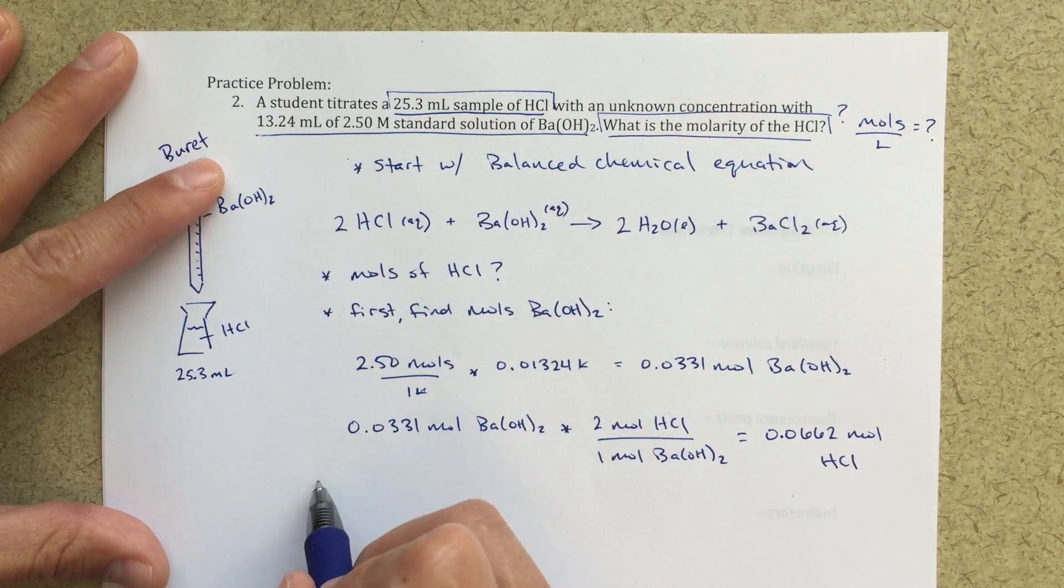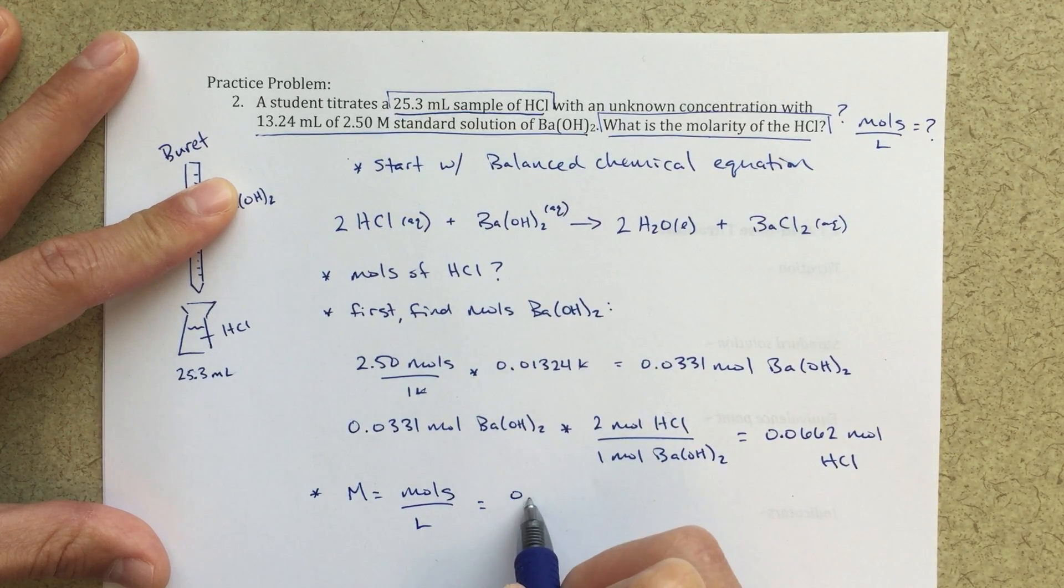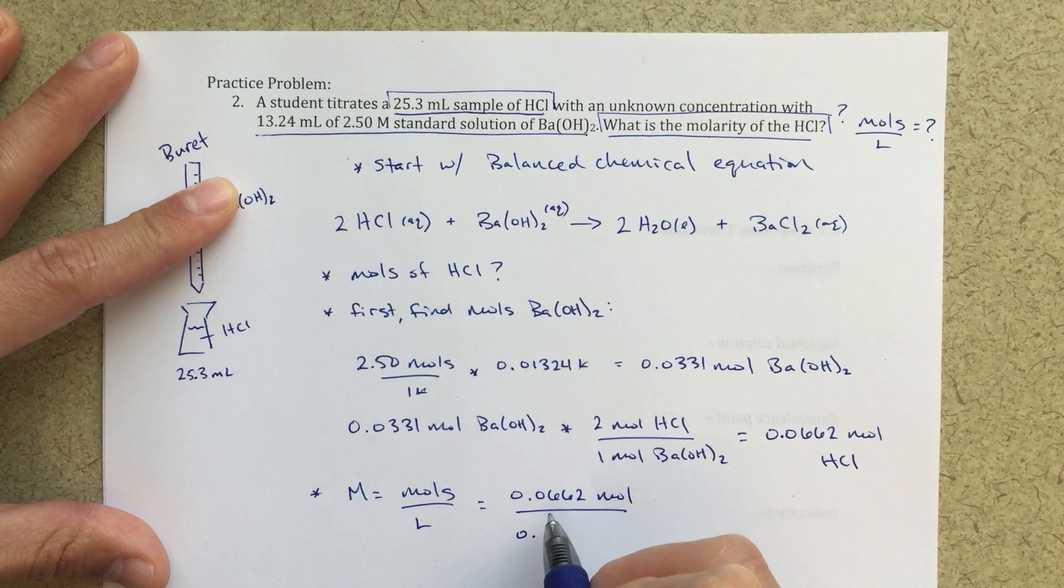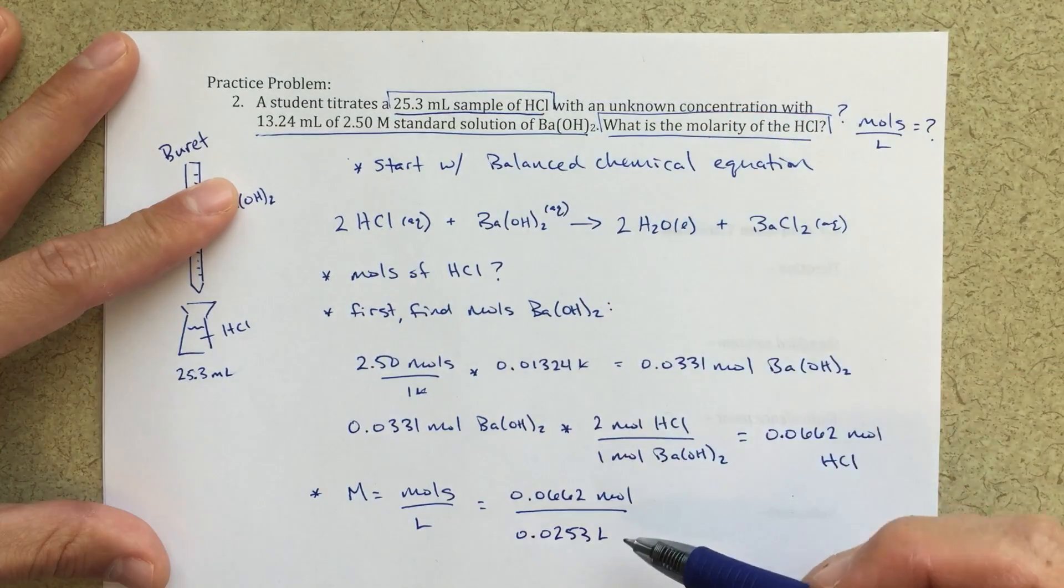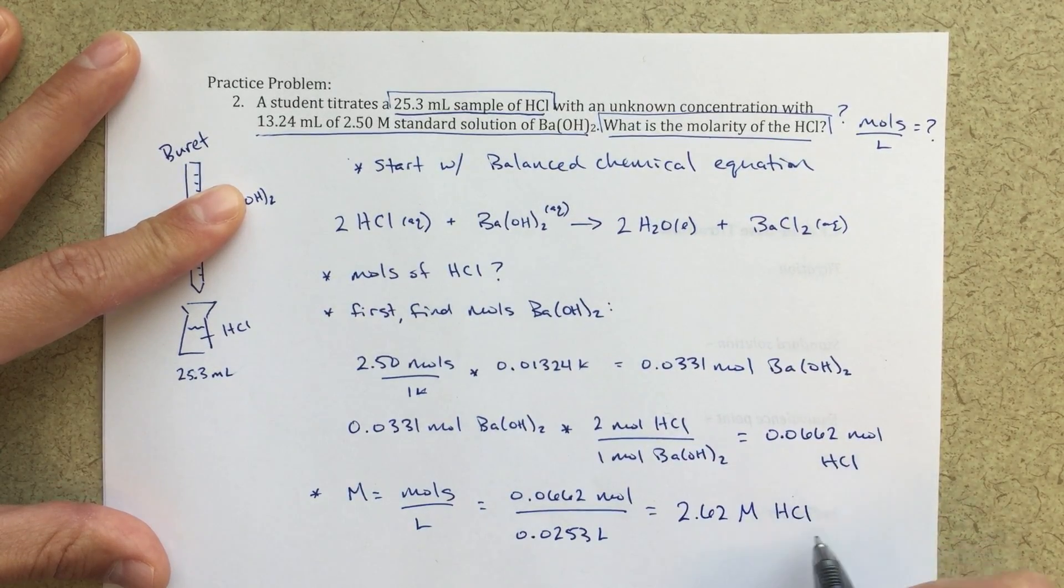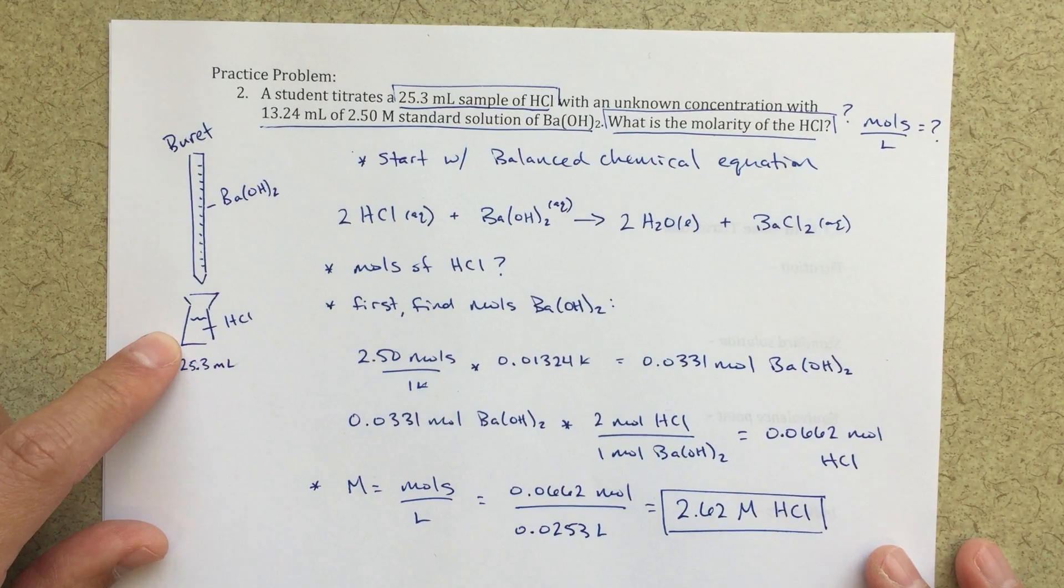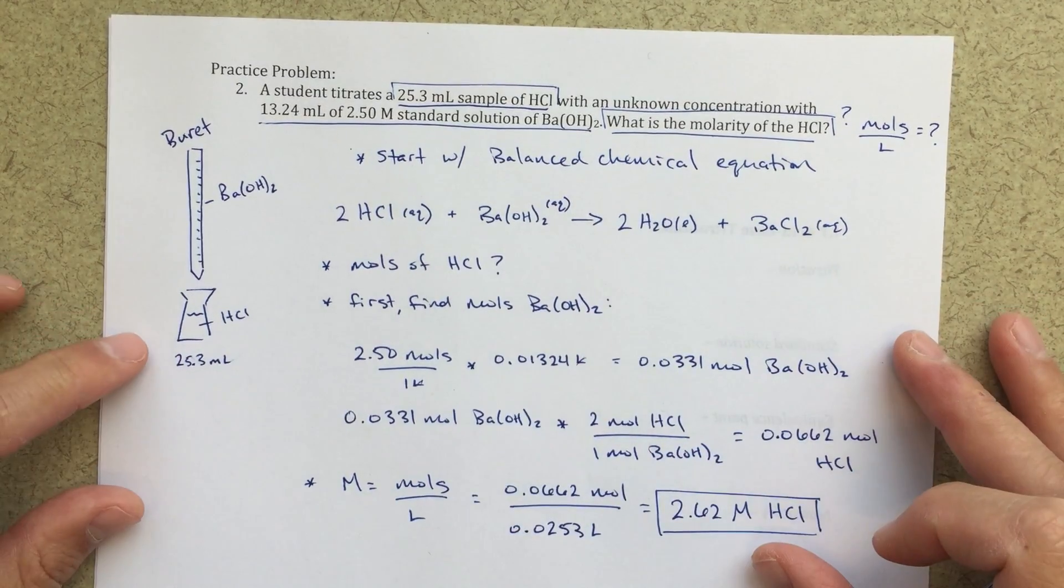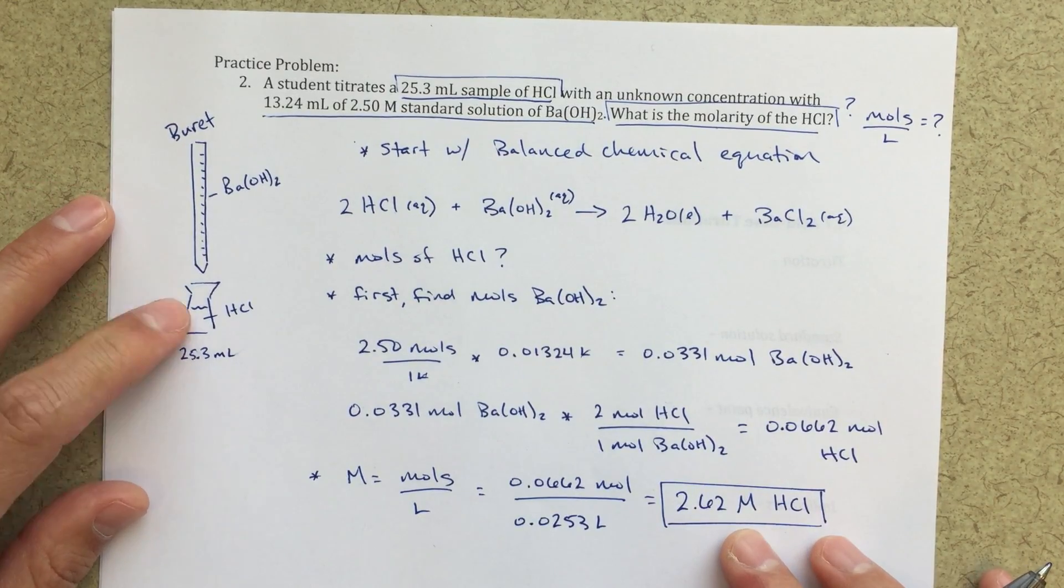So the last step here is to find the molarity. And that's just going to be the number of moles divided by the liters, or 0.0662 moles divided by 0.0253 liters. So again, converting this 25.3 milliliters into liters. And that gives me a final answer of 2.62 molar HCl. So what we've done essentially is we've taken this unknown molarity solution, and we've done a titration to the equivalence point. We would probably use phenolphthalein as an indicator here to tell us when we go from an acidic solution to a basic solution, and we can calculate the molarity of the HCl solution.